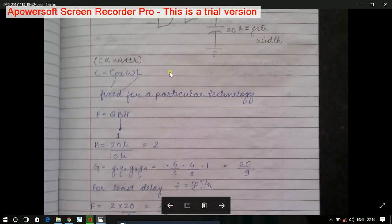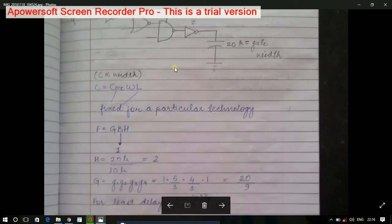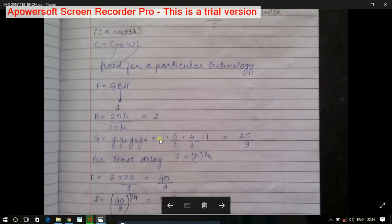Capital G is the product of the logical efforts of the individual structures. For the inverter, the logical effort is 1. For the NOR gate, it is (n+1)/3 where n is the number of inputs. Similarly, for NAND it is (n+2)/3.